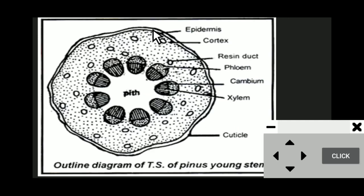Next comes the cortex. The cortex is differentiated into outer cortex and inner cortex. The outermost few layers of the cortex are lignified, forming a sclerenchymatous zone. The inner layers consist of thin-walled parenchymatous cells with numerous resin canals or resin ducts.